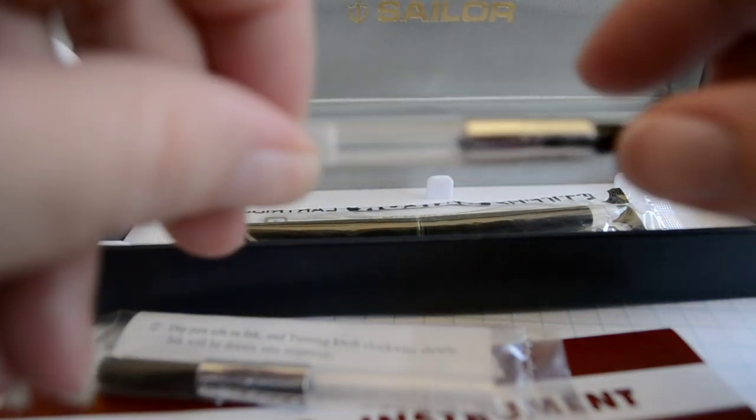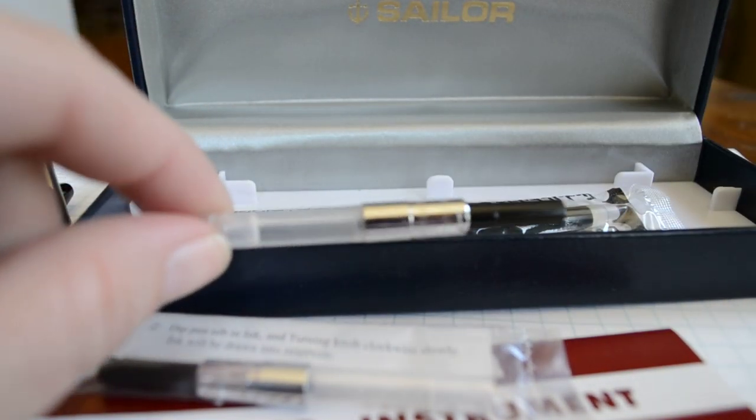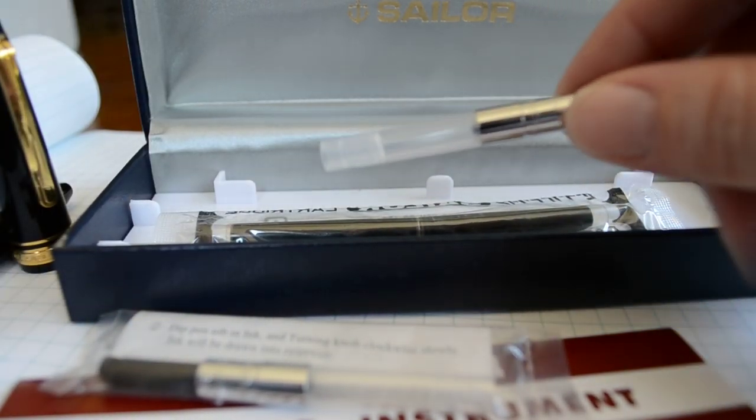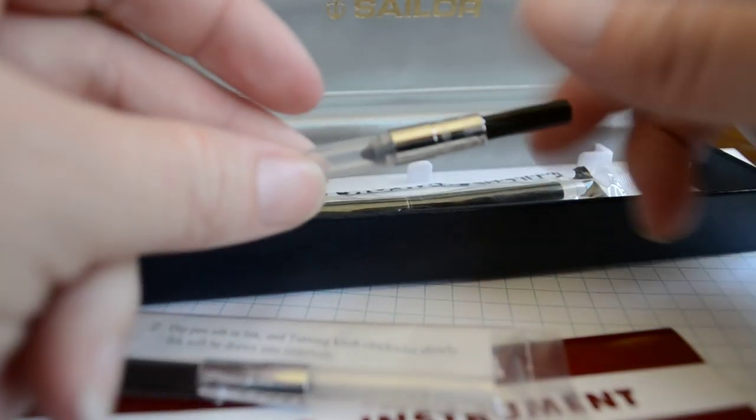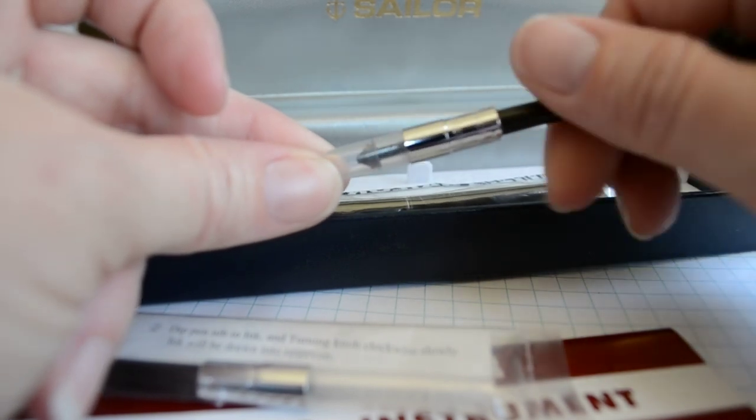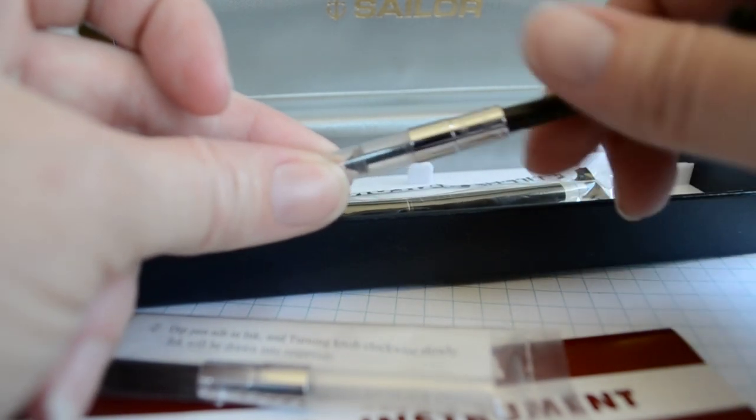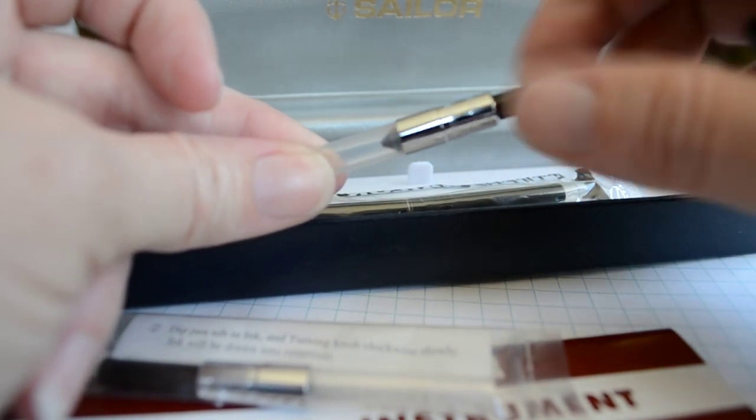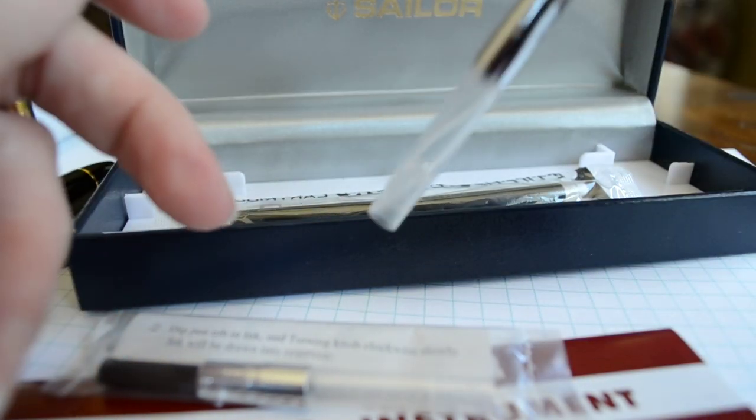This is the Sailor converter right here. You would plug this inside the back of the pen and then screw and unscrew in order to see that little plunger move up and down. That's going to suck the ink up when it's attached to the pen if you're using bottled ink.